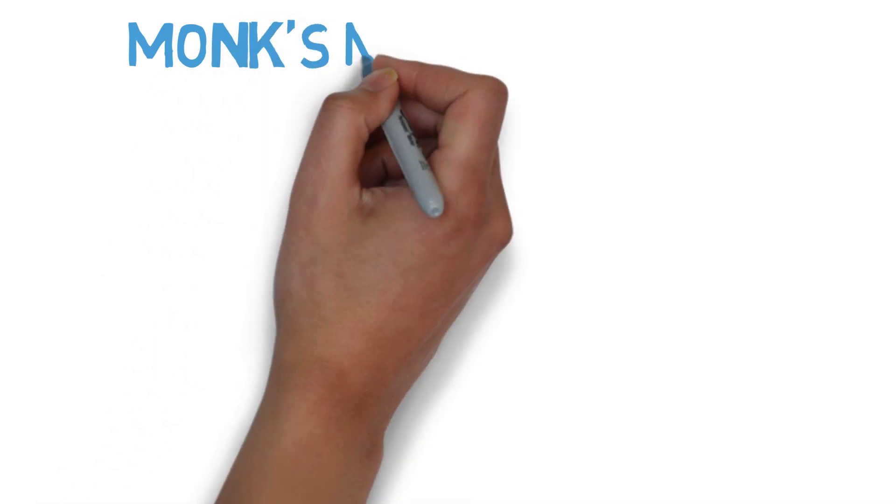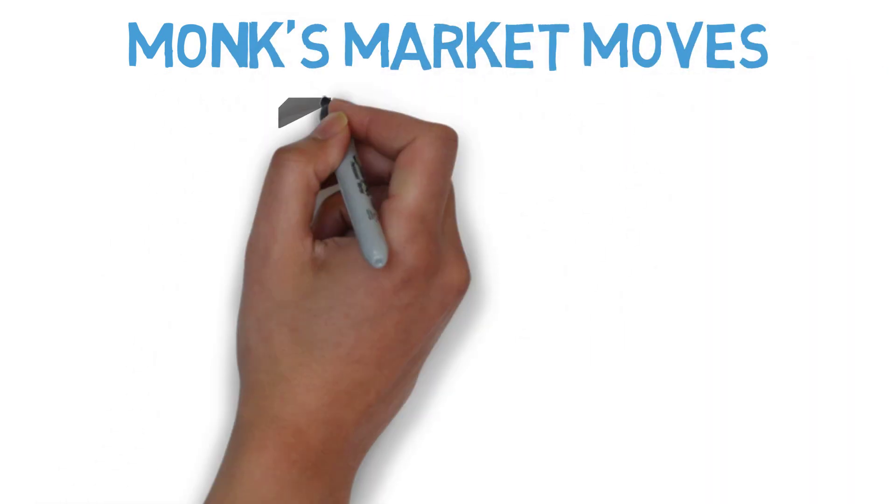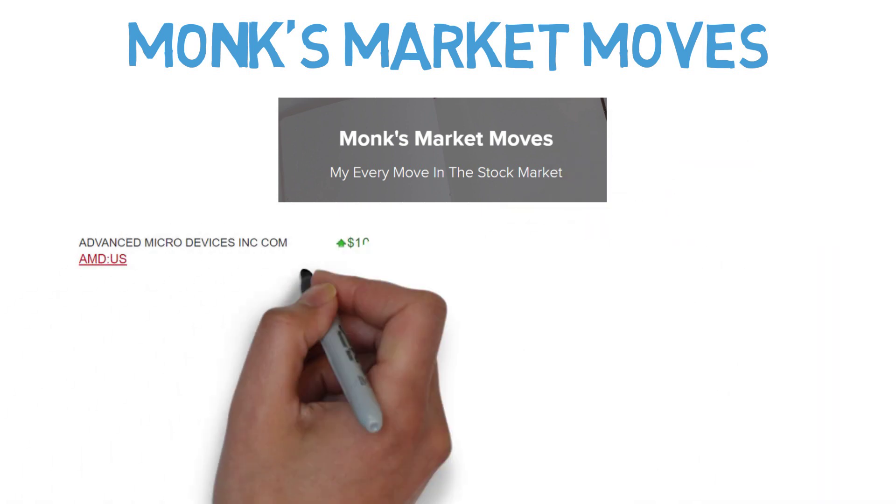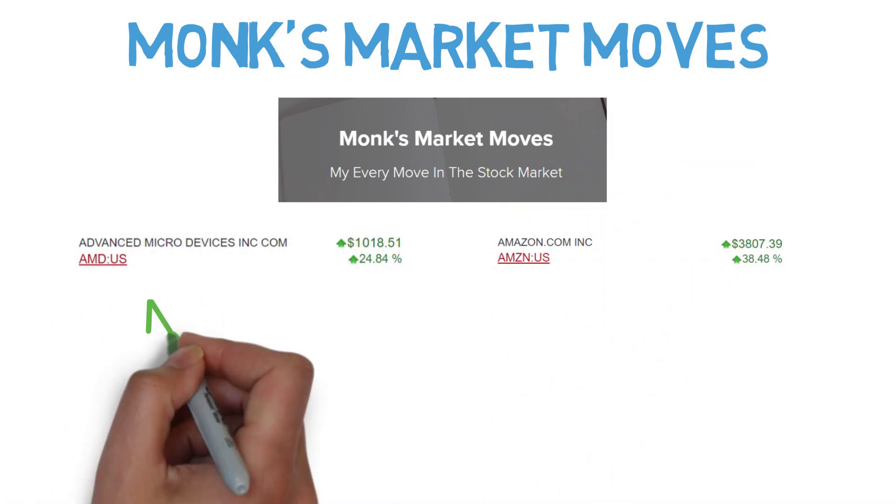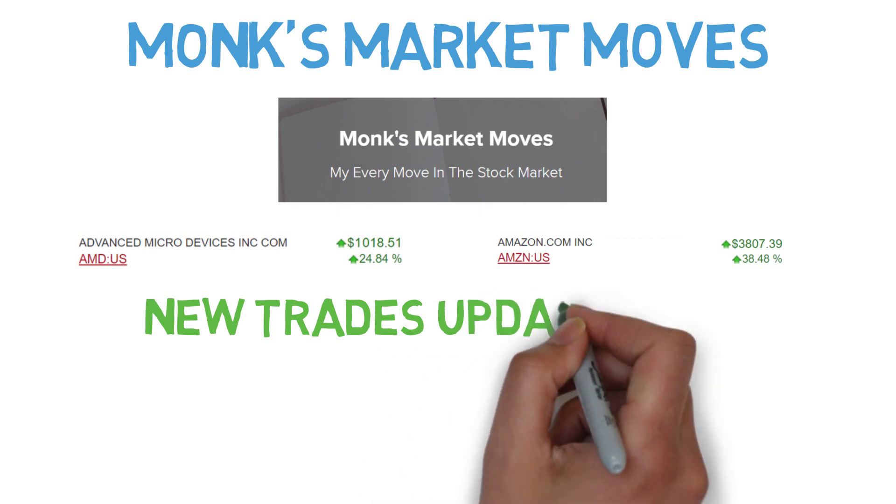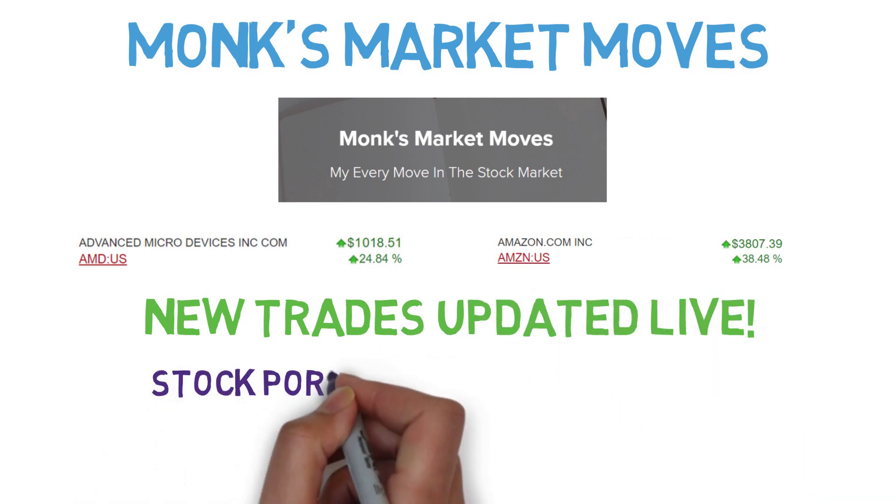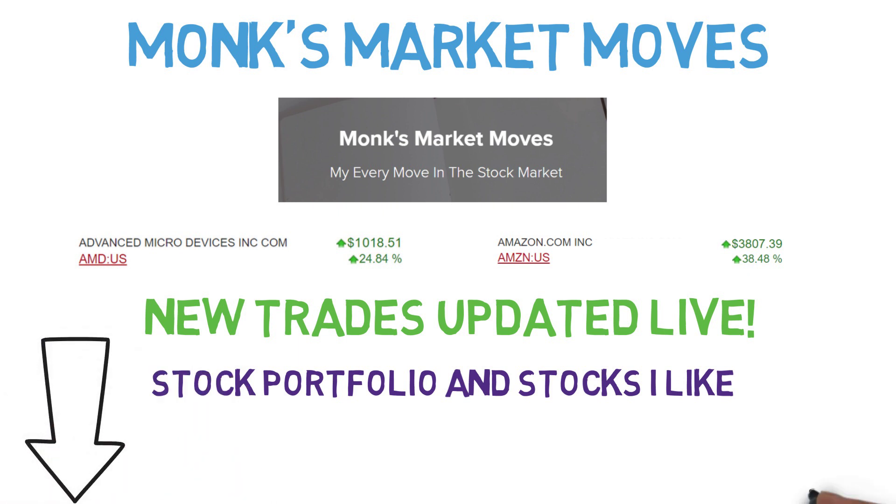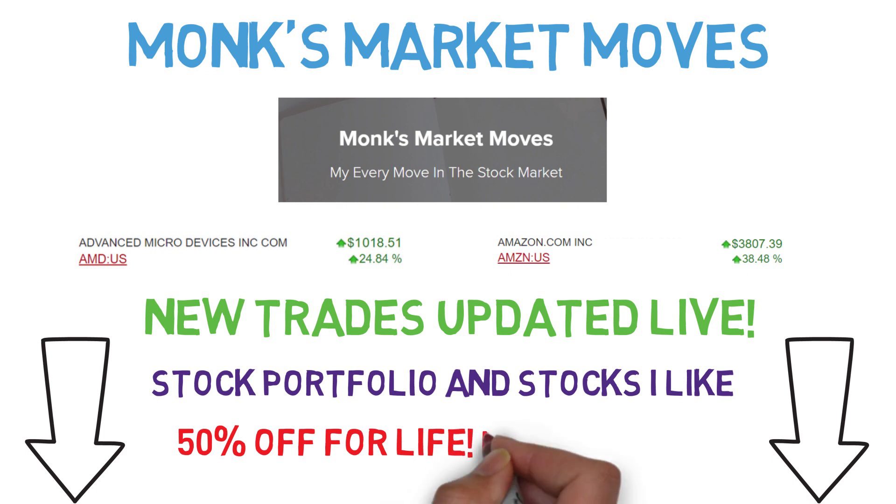Make sure to check out my stock market group. It includes live updates of when I buy or sell a stock. Some recent trades include AMD, up 25%, and Facebook, up 6%. I'll be making some new trades in the coming week. It also includes my personal stock portfolio. There's a section for stocks I'm interested in buying and analysis of the current market. A great group for investors who need that extra edge in trading stocks.